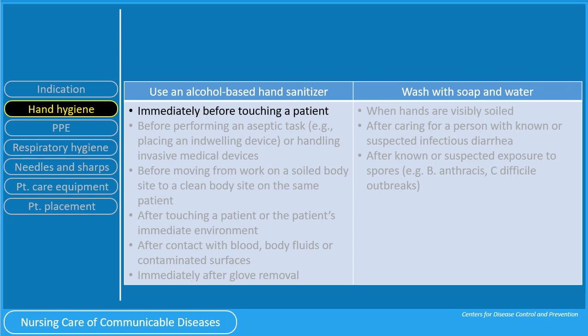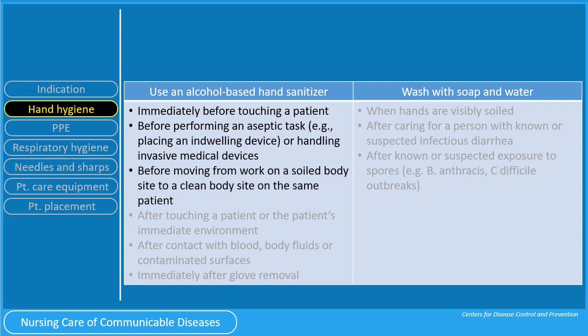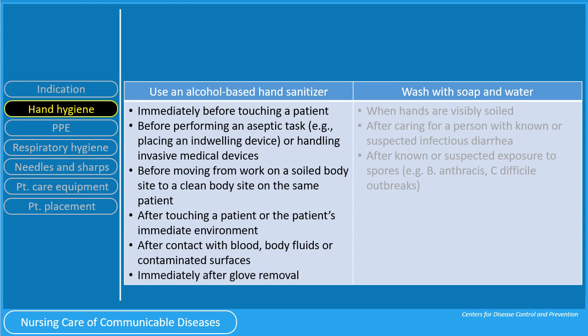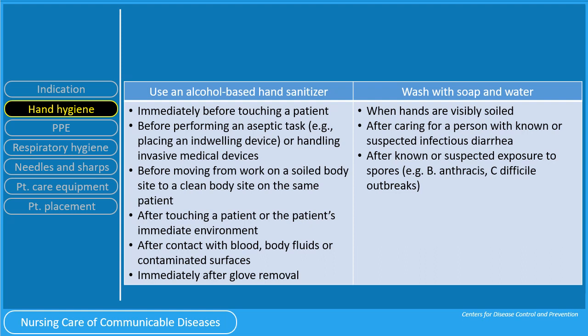Use an alcohol-based hand sanitizer immediately before touching a patient, before performing an aseptic technique or handling invasive medical devices, before moving from work on a soiled body site to a clean body site on the same patient, after touching a patient or the patient's immediate environment, after contact with blood, body fluids, or contaminated surfaces, and immediately after glove removal. Hand washing with soap and water is recommended when the hands are visibly soiled, after caring for a person with known or suspected infectious diarrhea, and after known or suspected exposure to spores.